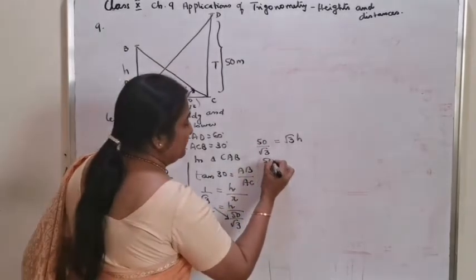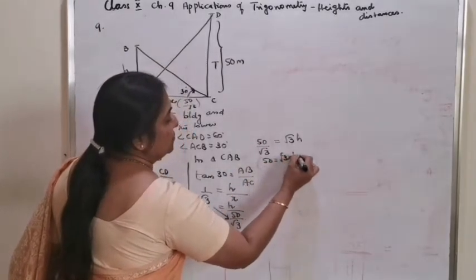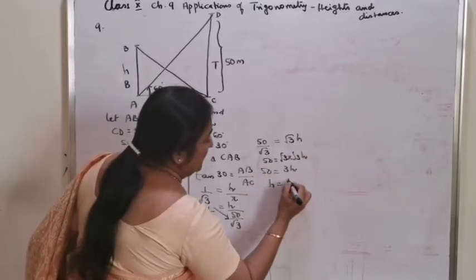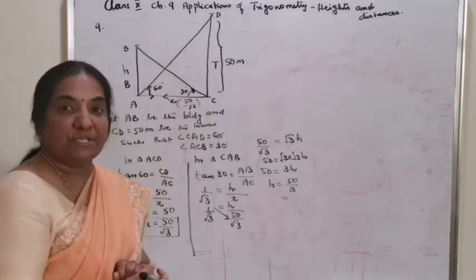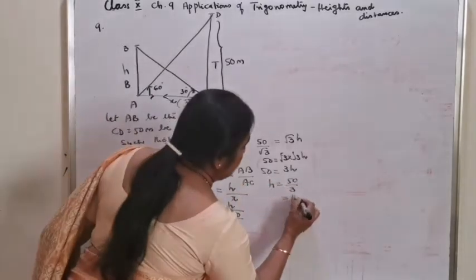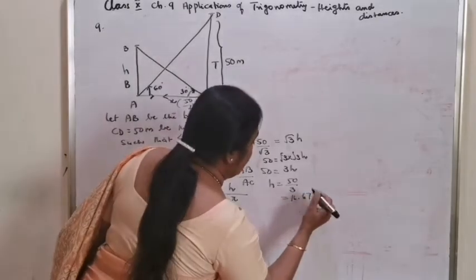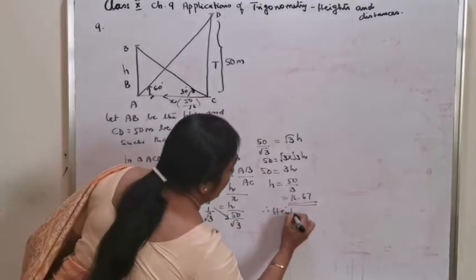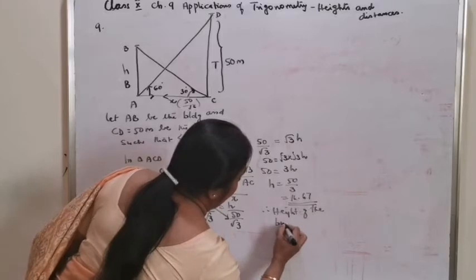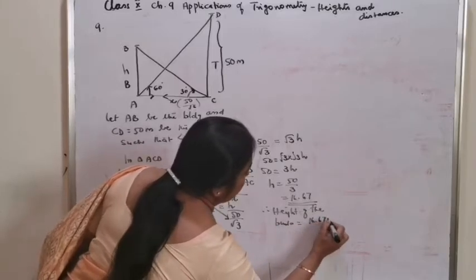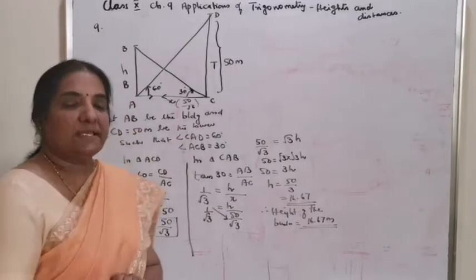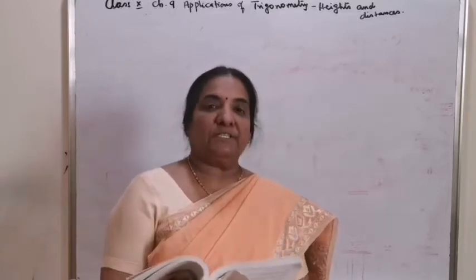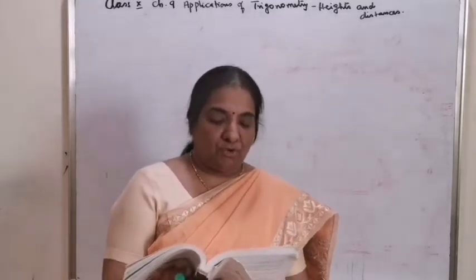1 by root 3 equals H divided by (50 by root 3). Cross multiply: 50 by root 3 equals root 3 H. Again cross multiply: 50 equals root 3 into root 3 H, so 50 equals 3H. Therefore H equals 50 divided by 3, which is 16.67. Therefore the height of the building is equal to 16.67 meters. This is an important 3-mark question.